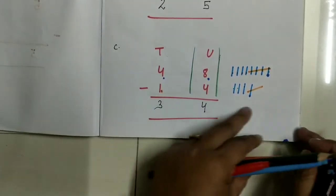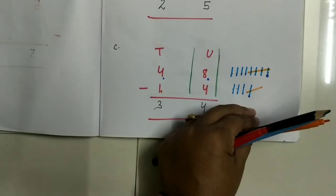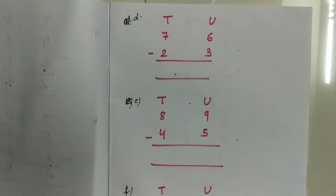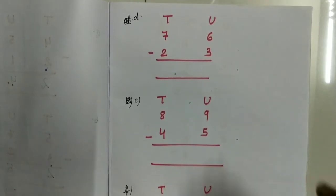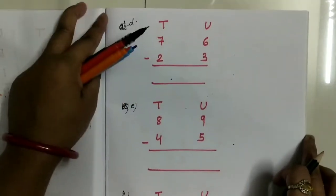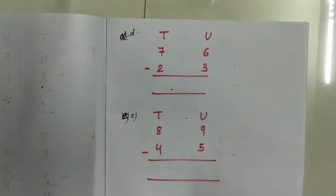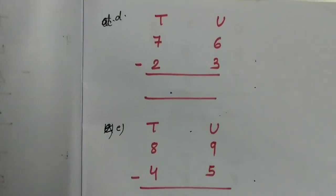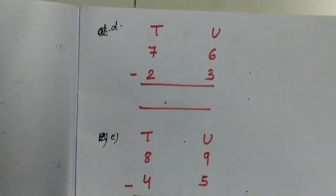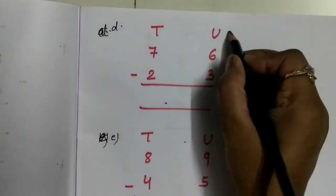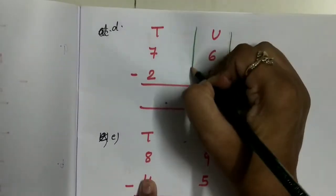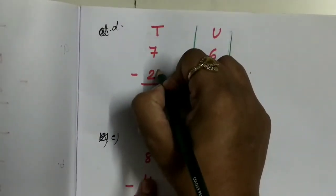So 4 minus 1 will be 3. Now come to the next question, question number D. Children, identify the unit column and tens column.